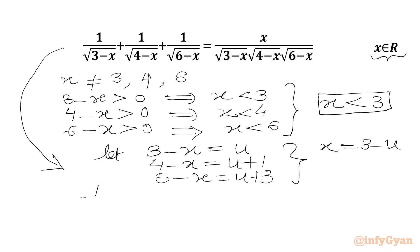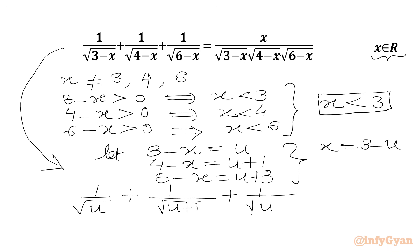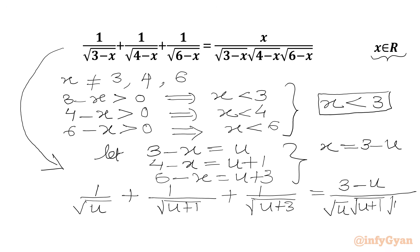We will write 1 over square root u plus 1 over square root of (4 minus x), so we will write square root u plus 1 over square root of (u plus 3). In the RHS we have x, so we will write 3 minus u. In the denominator we will write square root u times square root (u plus 1) times square root (u plus 3).